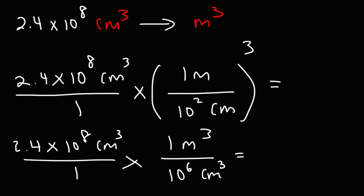So this becomes 1 cubic meter, and then 10 squared raised to the third power. That's going to be 10 to the sixth cubic centimeters. So at this point, we can cancel the unit cubic centimeters, and then we can divide 10 to the eighth by 10 to the sixth. When you divide by a common base, in this case base 10, you need to subtract the exponents. So subtracting 8 by 6 gives us 2. Thus the answer is going to be 2.4 times 10 to the second power cubic meters.